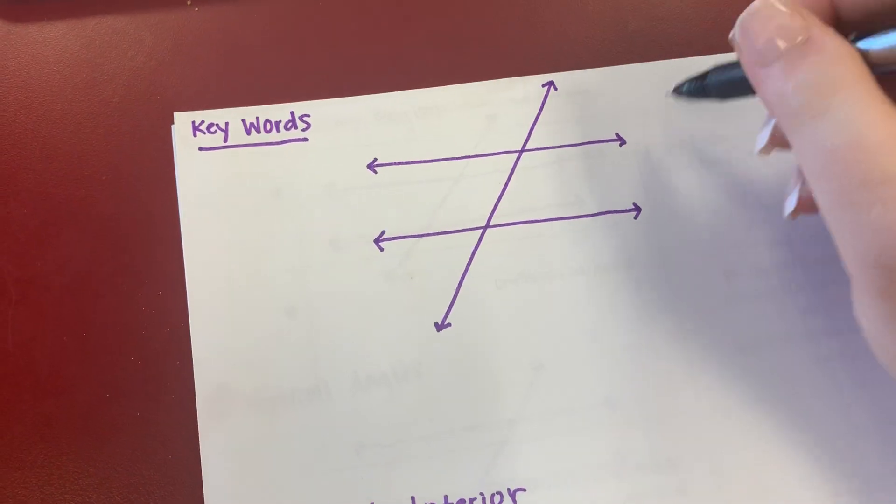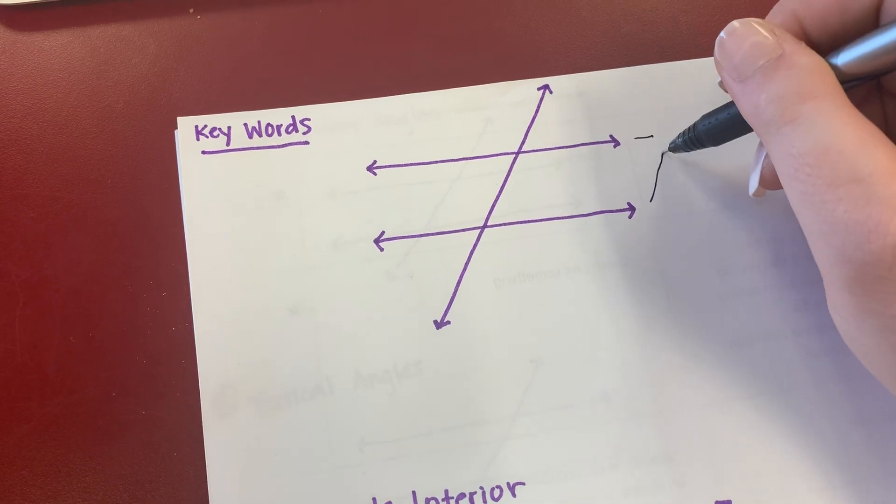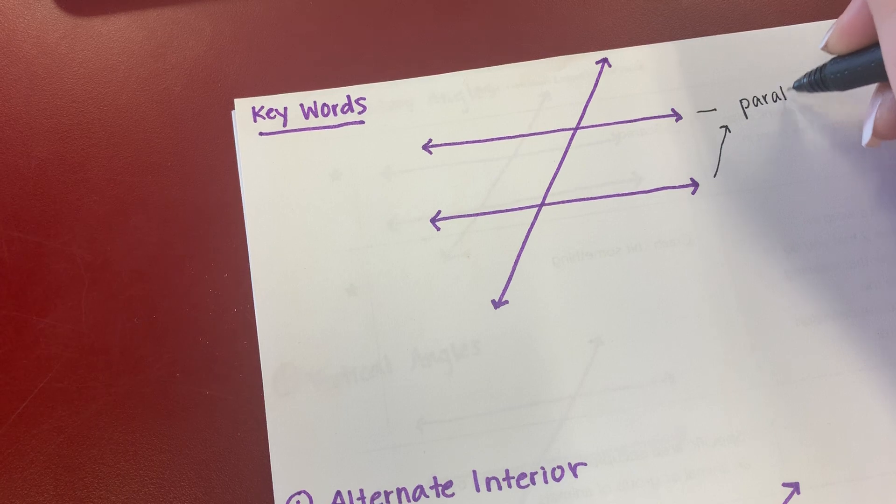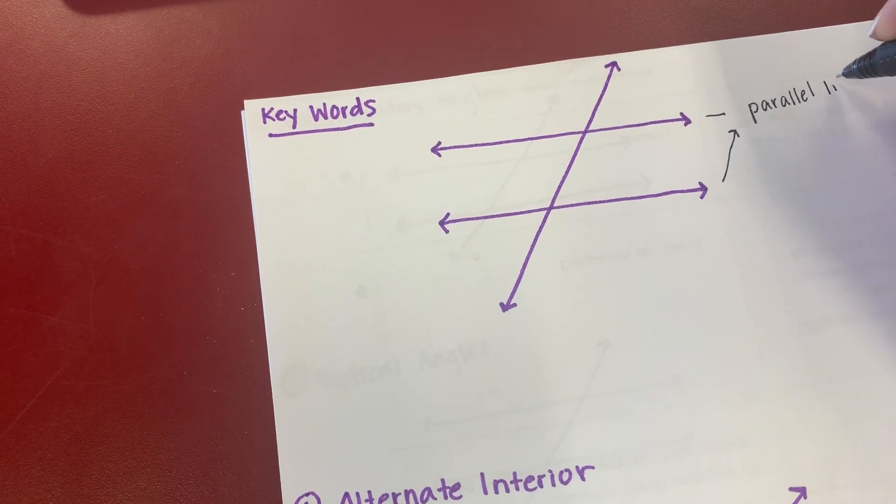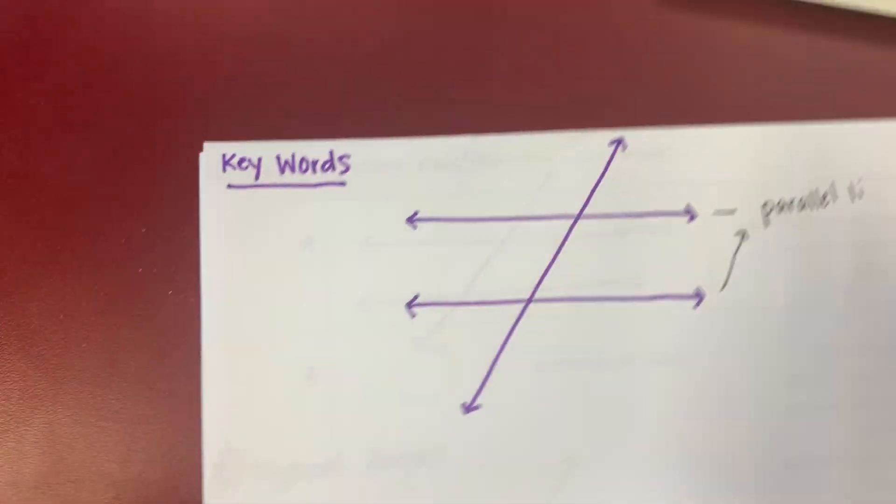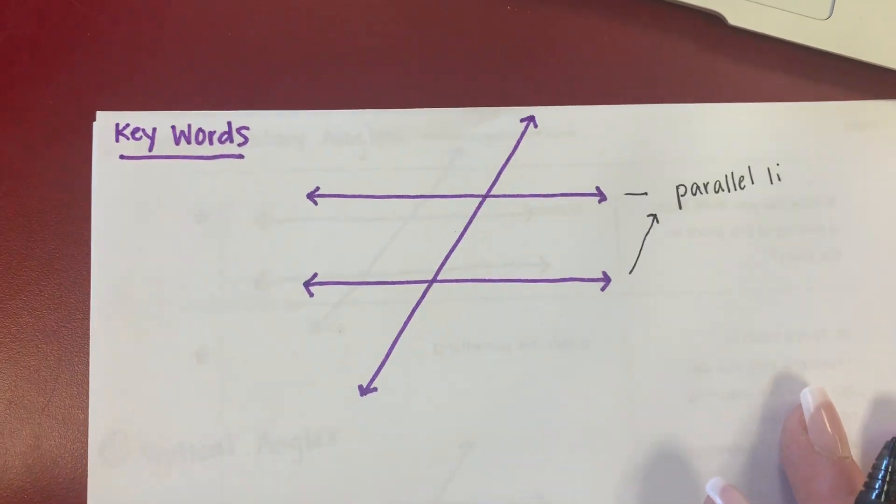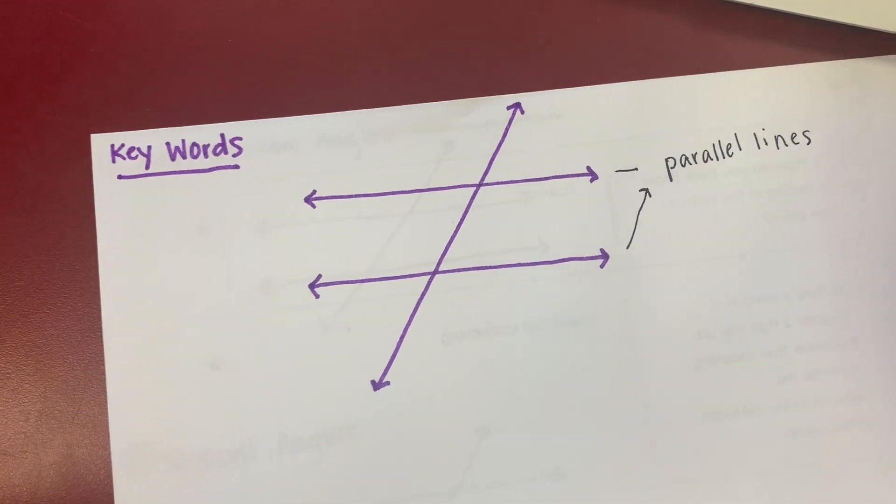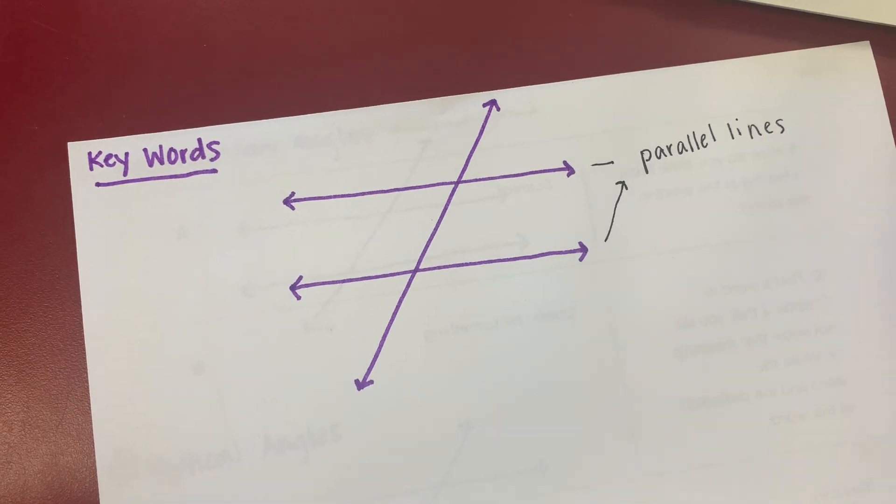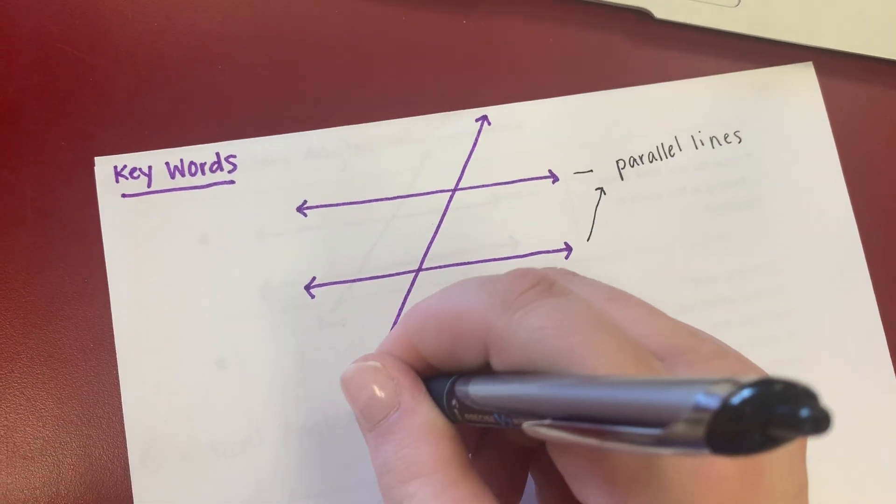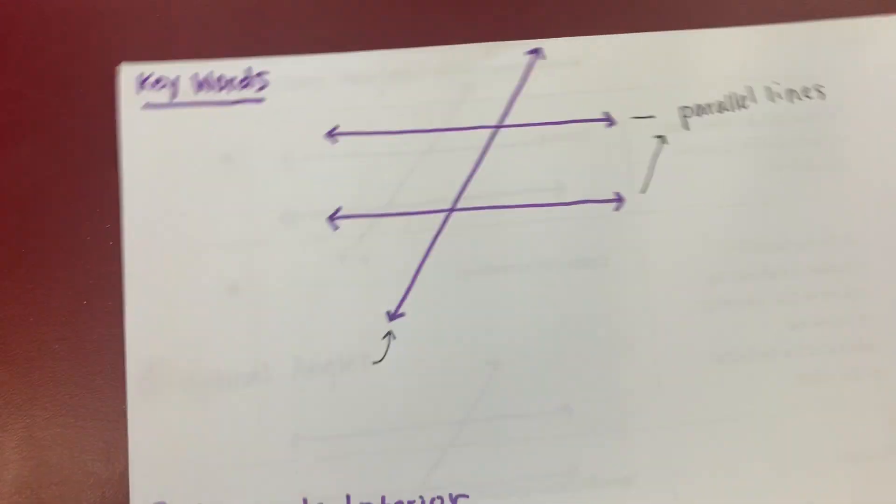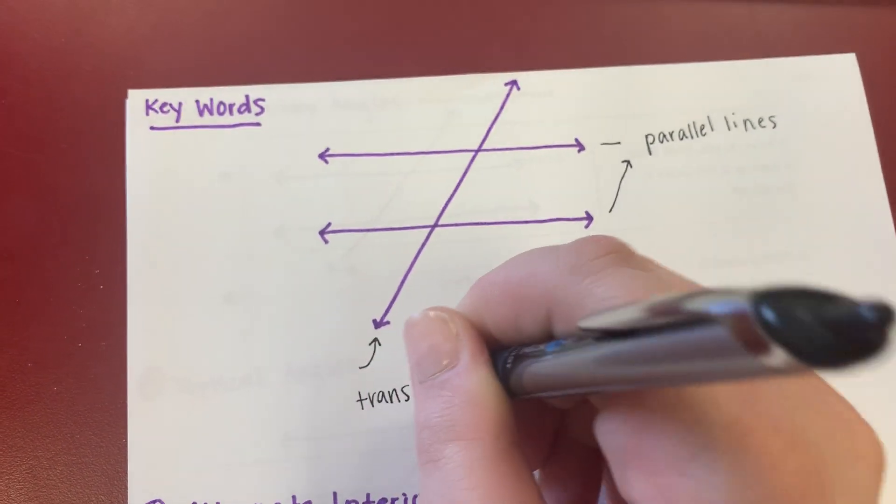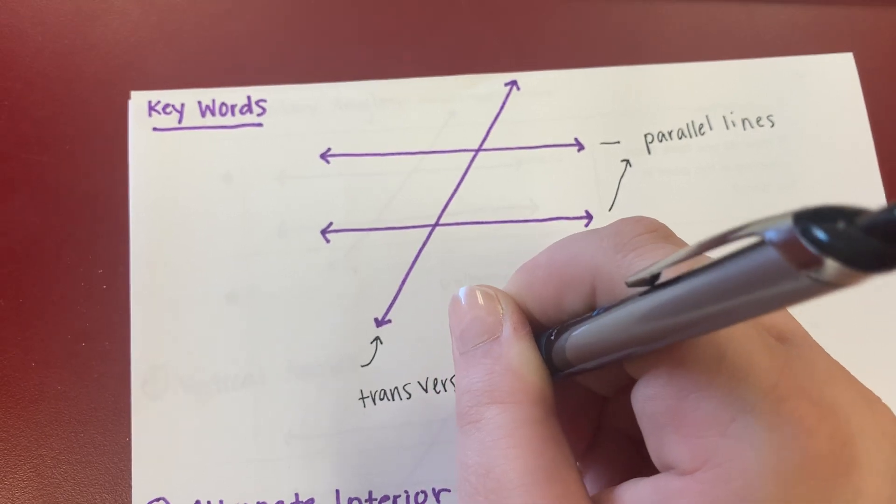So these are called parallel lines. Parallel lines, and these things are lines that never touch. These lines never touch. This is called a transversal.